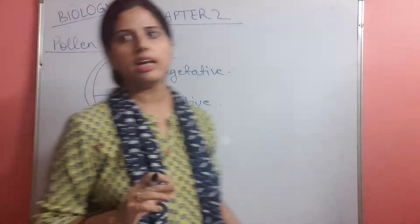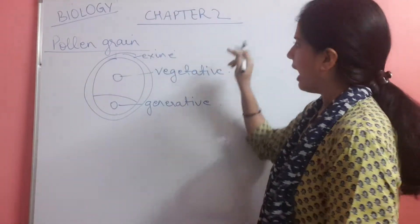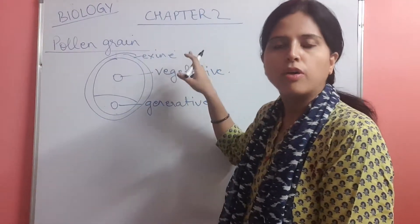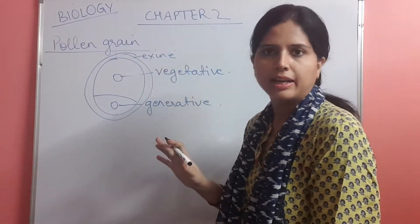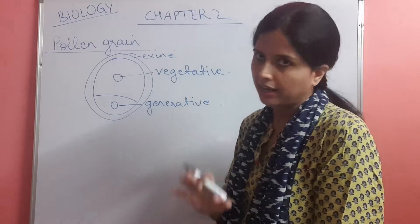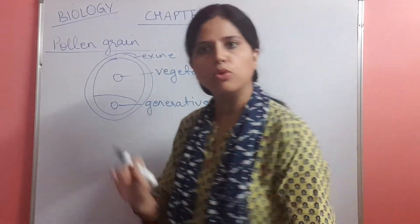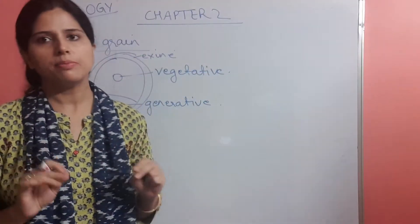Which is made up of sporopollenin, and that is why it is also found in the fossil because it cannot be degraded by any acid or any alkali. It is one of the most resistant chemicals present on this earth's surface.